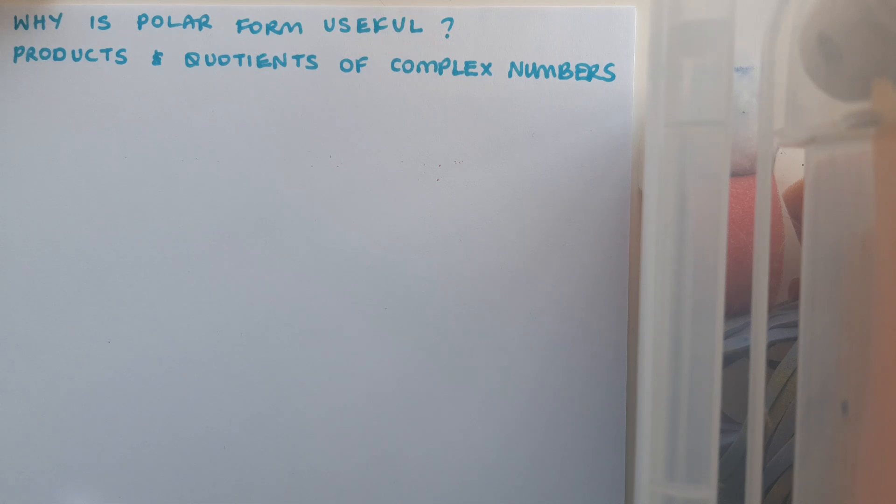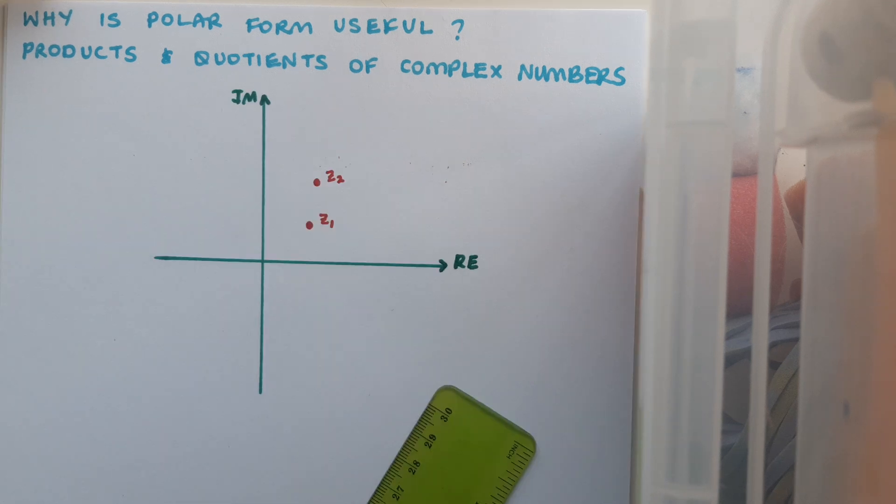This video is about why polar form is useful and focuses on products and quotients of complex numbers. In a previous video, we looked at the effects of multiplying complex numbers together and the geometric effect on the Argand diagram. The calculation involved with the Cartesian version was a little bit cumbersome—you had to multiply out all your brackets and tidy it all up to figure out where your final location would be.